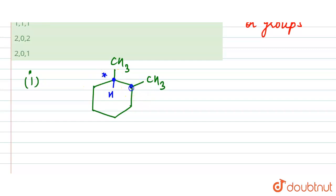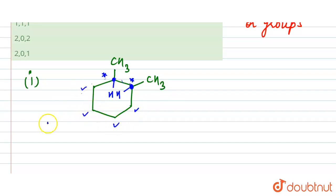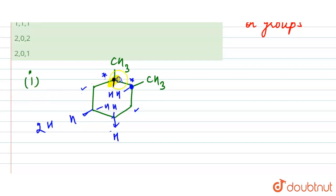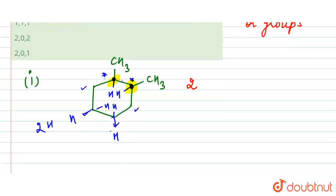For carbon 2, we have one whole chain portion, one hydrogen, and one CH3 group — so this carbon is also chiral. The other carbons on the ring have two hydrogens attached, so they are not chiral. Due to the attachment of substituents, we have two chiral centers in 1,2-dimethylcyclohexane.